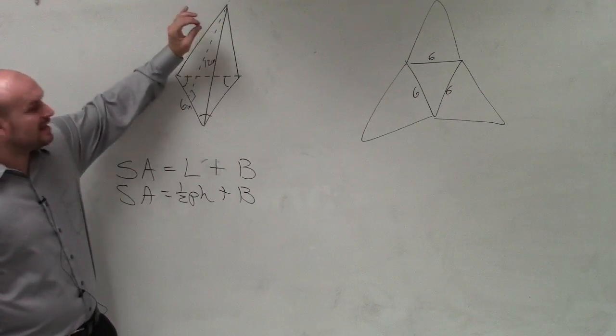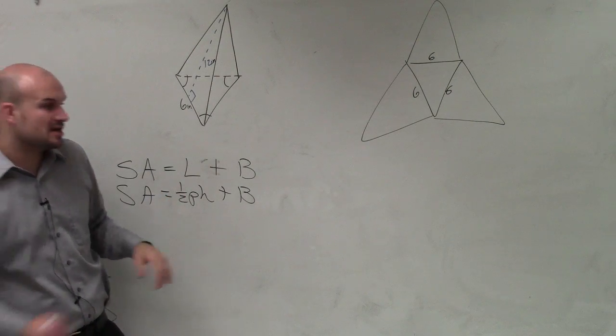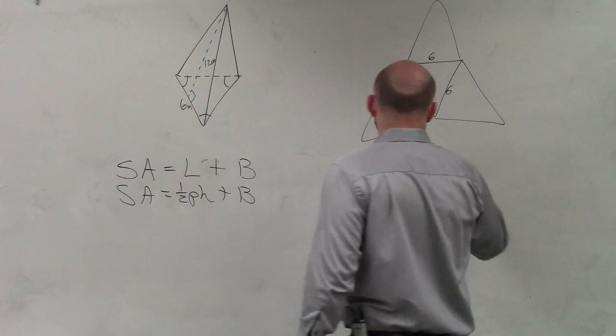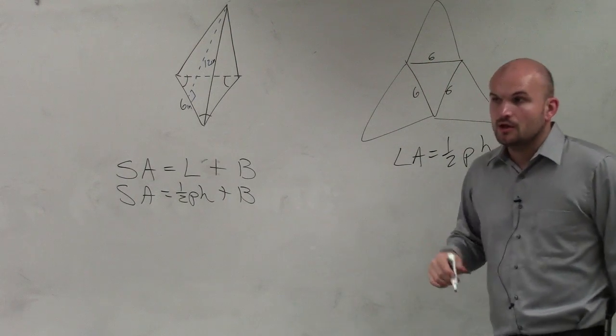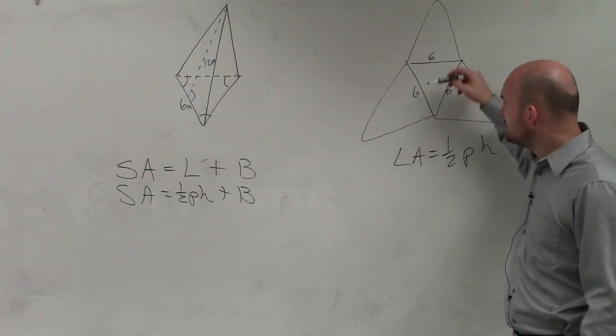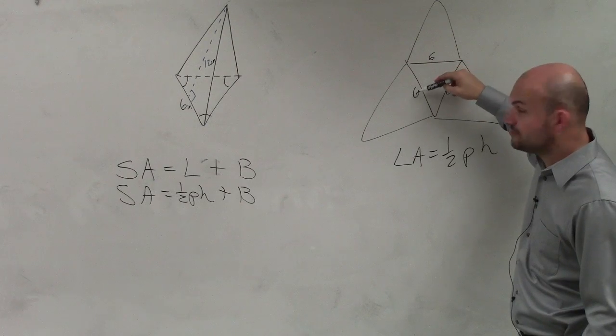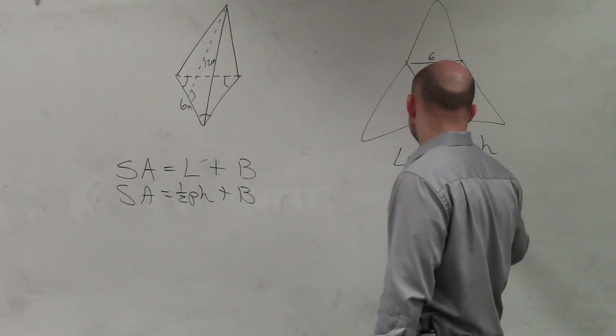Now, when we're looking at this, again, it says to find the lateral surface area, it's 1 half perimeter times height. The lateral area equals 1 half perimeter times height. And the perimeter that they're discussing is the perimeter of the base. So to find the perimeter of the base, all I simply need to do is add 6 plus 6 plus 6, which is equal to 18.